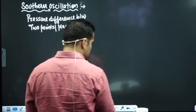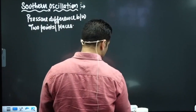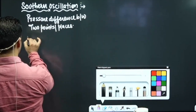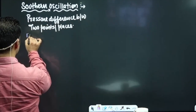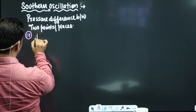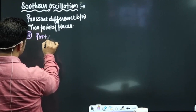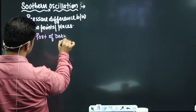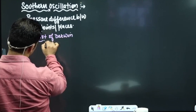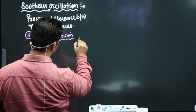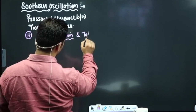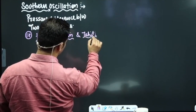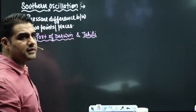When we talk about this pressure difference between two points or two places, we take two places: the Port of Darwin and Tahiti.